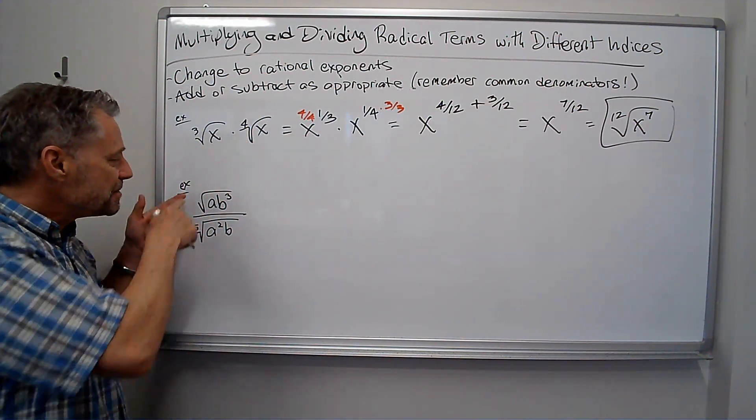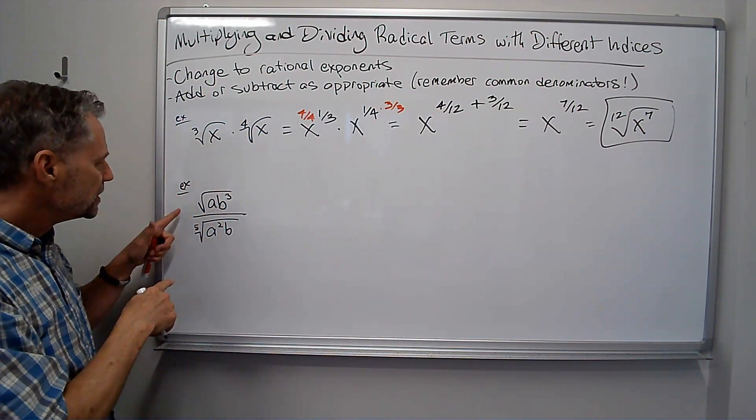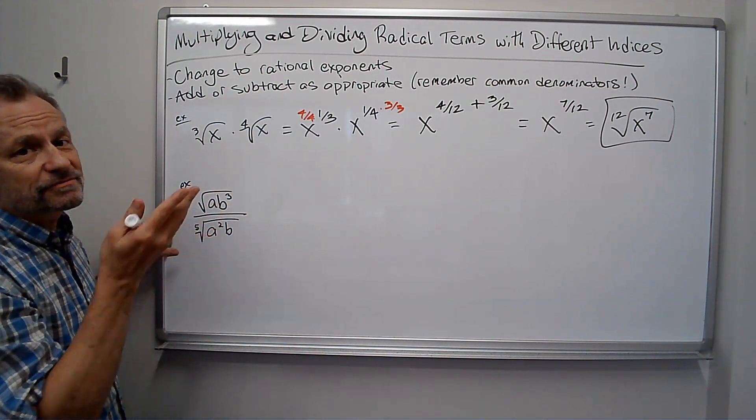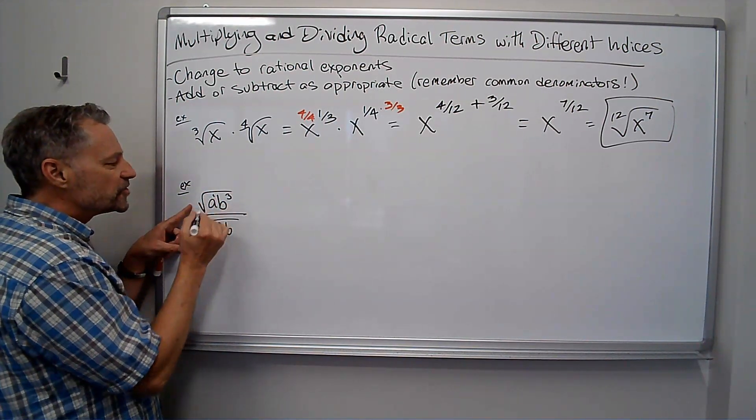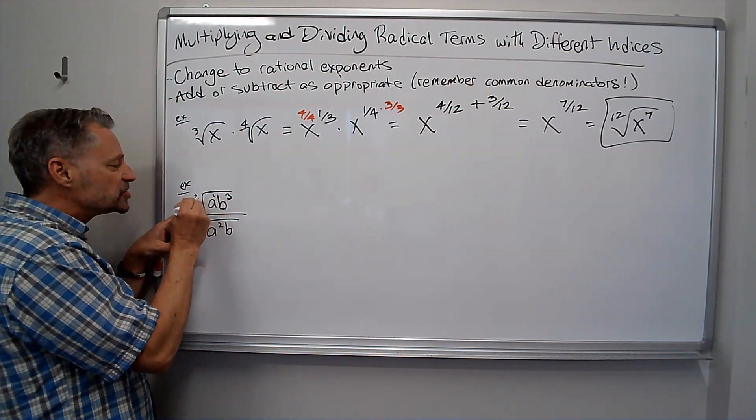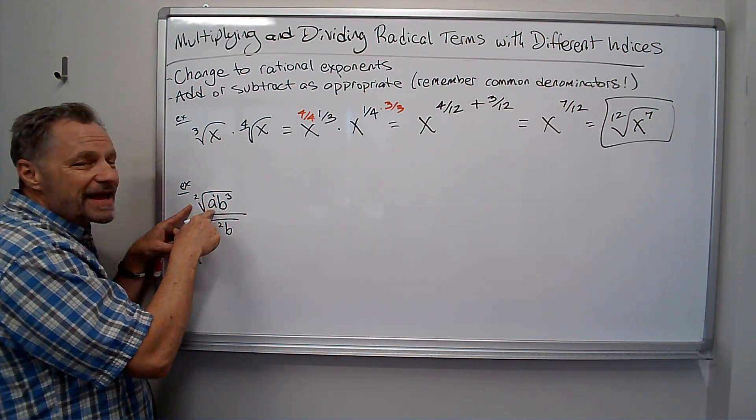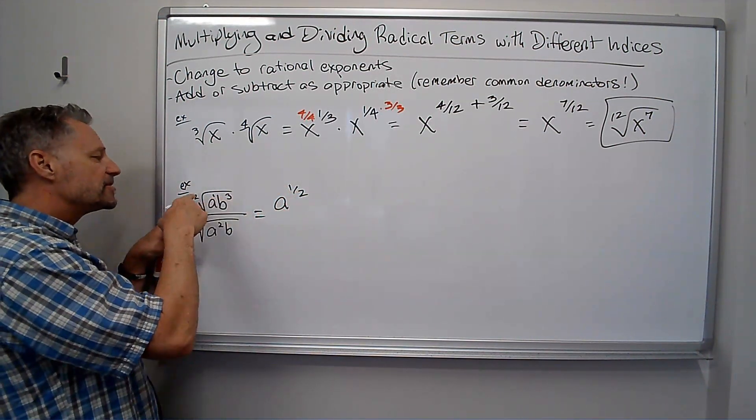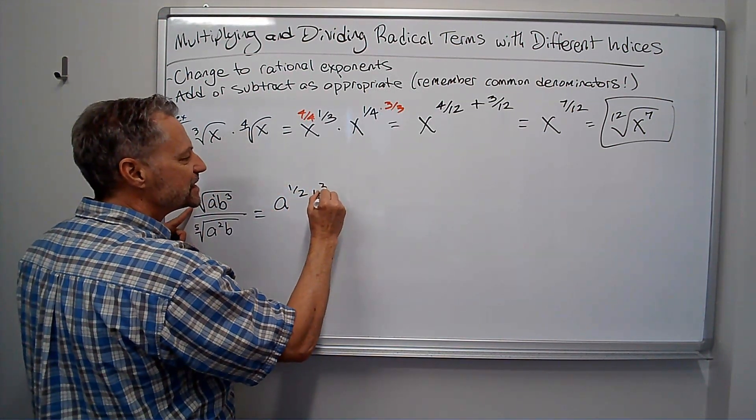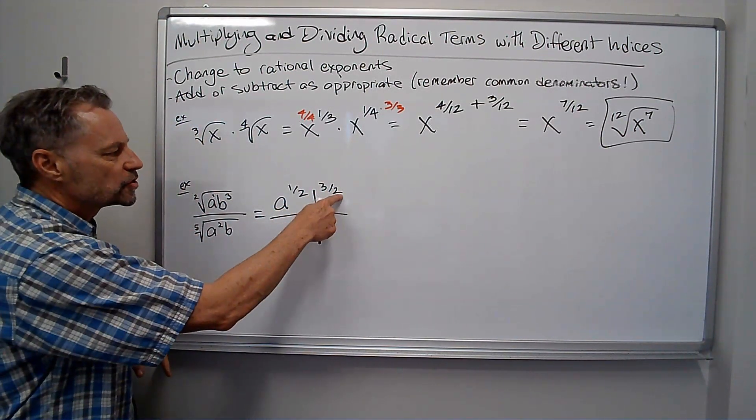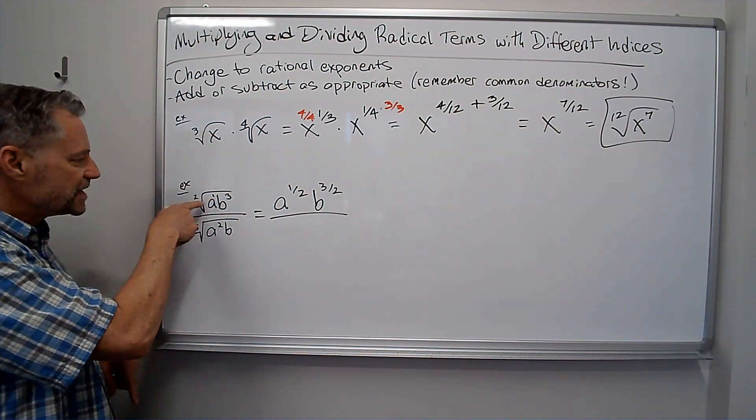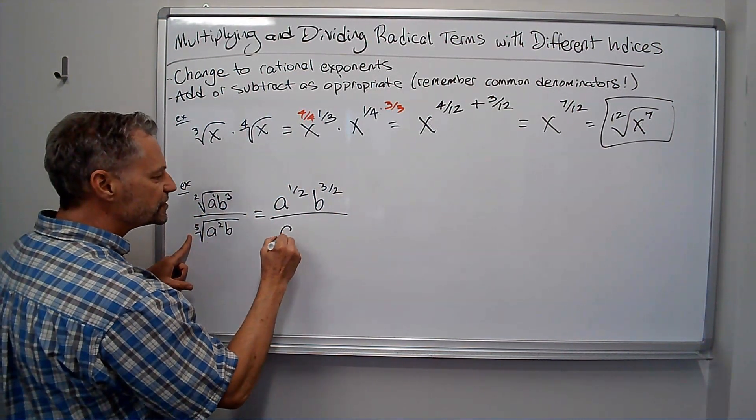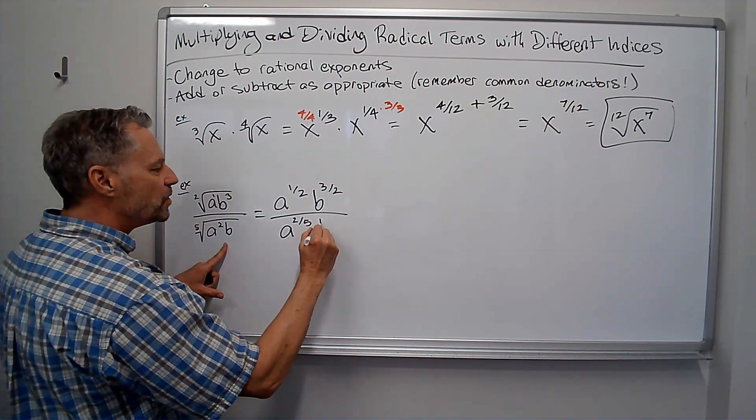A little bit more difficult. This time I'm dividing. Again, I'm going to change these to rational exponents, fractional exponents. Well, this a is a to the first, but I've got a square root, which is really a two. So the square root of a means a to the one-half power. And b to the third, that means b to the three-halves, once I take the square root. The square root of b to the third. That's what that was. And over here is the one-fifth power. So it's a to the two-fifths, b to the one-fifth.